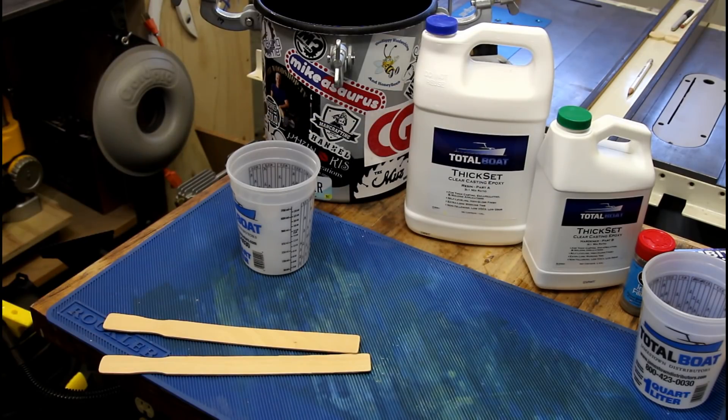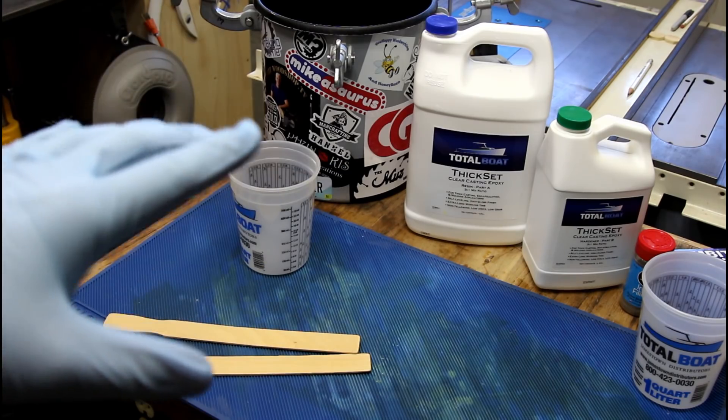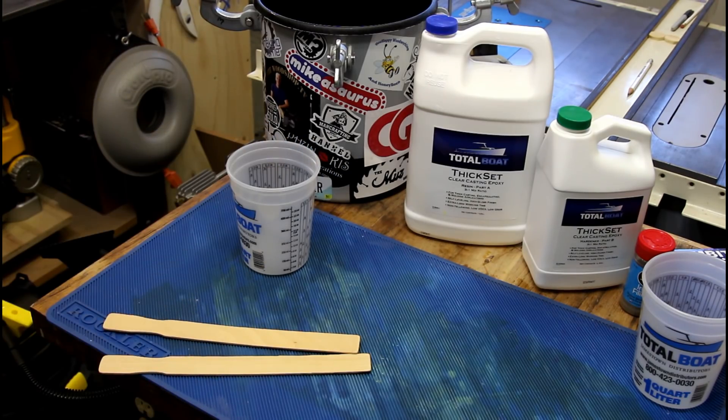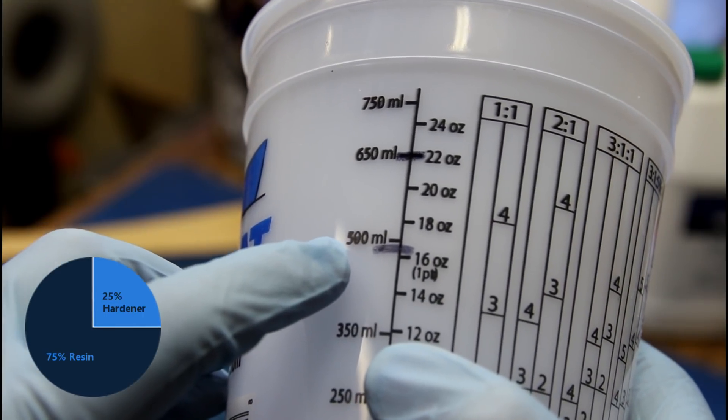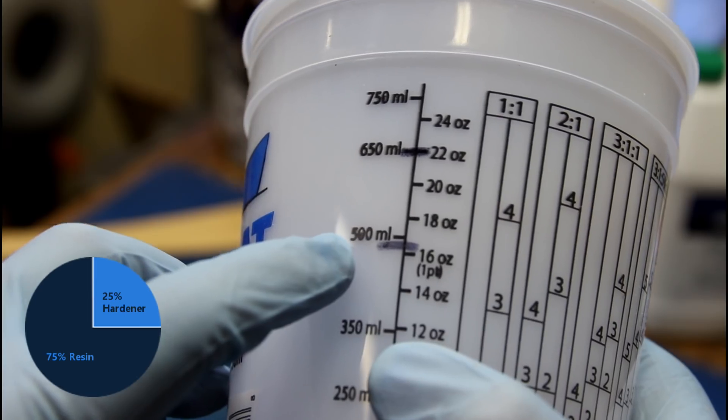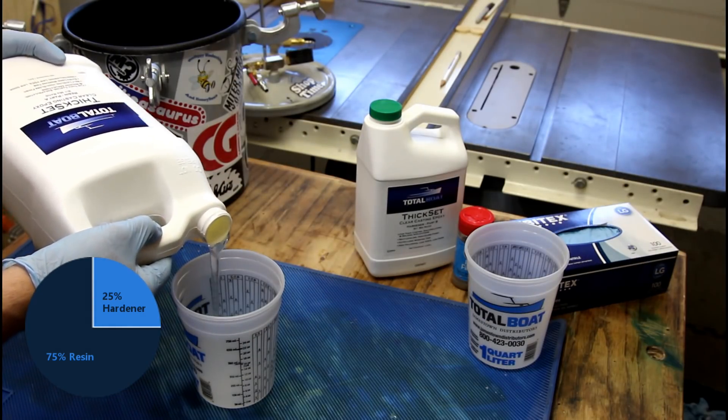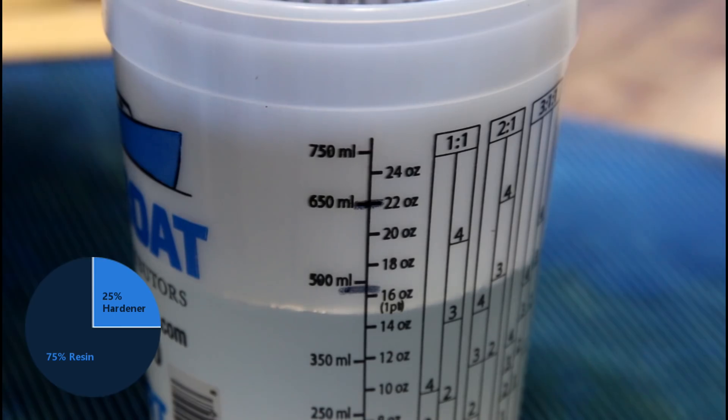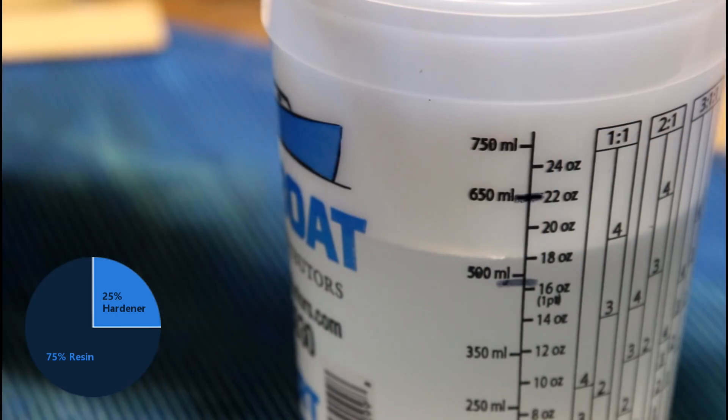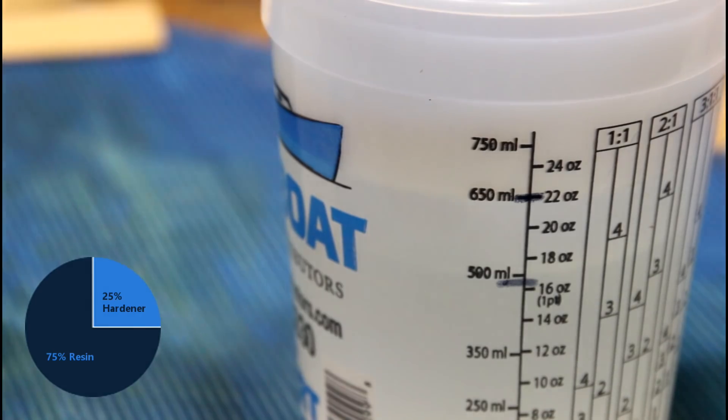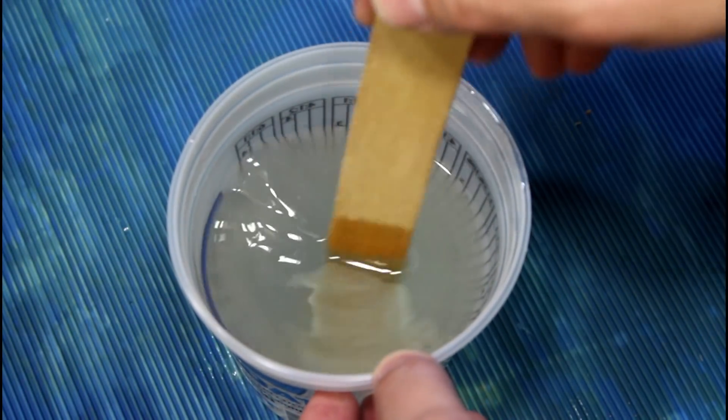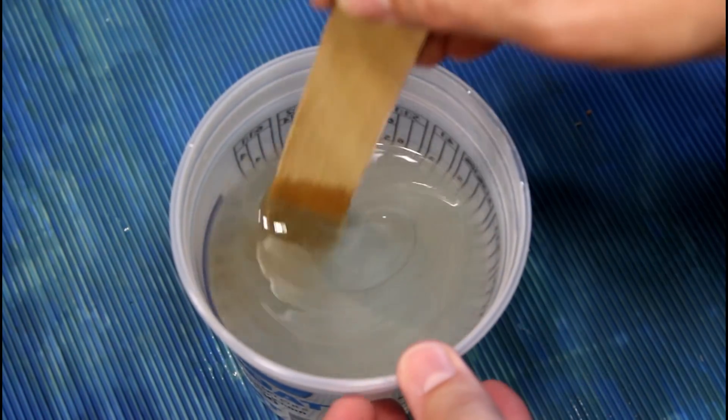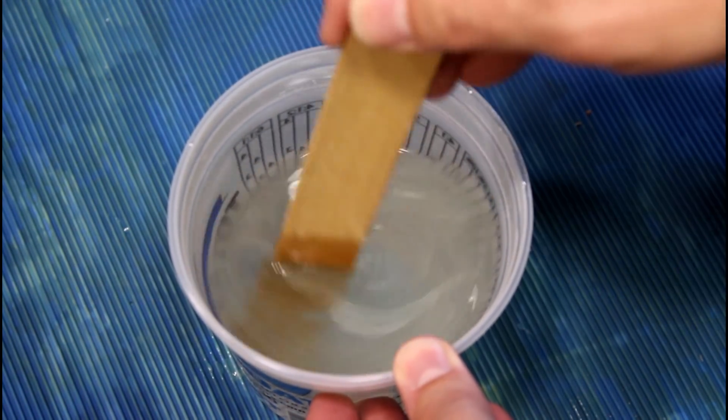For the resin today, we're going to be using Total Boat's thick set resin. The recommended maximum for this resin is one to two inches. We're going to at least double that. If it fails, it's not their fault. This resin is a three to one resin. We're going to add just under 500 milliliters of part A and part B to 650 milliliters. For this type of resin, I always enjoy it. It starts off very opaque, and as you stir it, you will notice it starts to change to a clear substance.